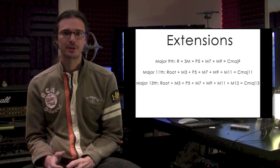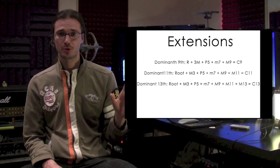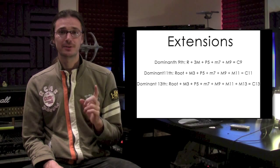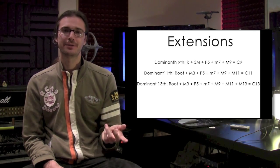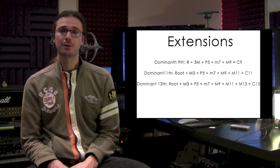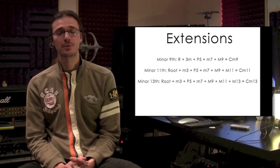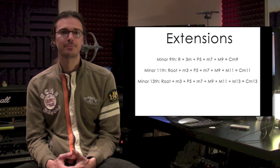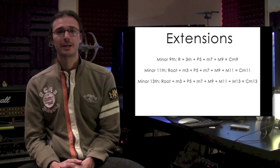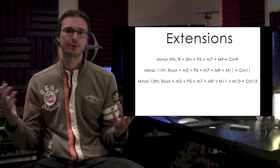If you see a chord that says C9 or C11 without 'major' in front, you have a dominant chord — a major chord with a minor seventh. The base is C7, and then you add 9, 11, or 13. Those chords are called C9, C11, C13 — all of them are seventh chords plus the respective extensions. For minor, it works exactly the same: you can have minor 7, minor 9, minor 11, minor 13. A minor 9 chord is just a minor 7 chord plus the 9th, and so on.